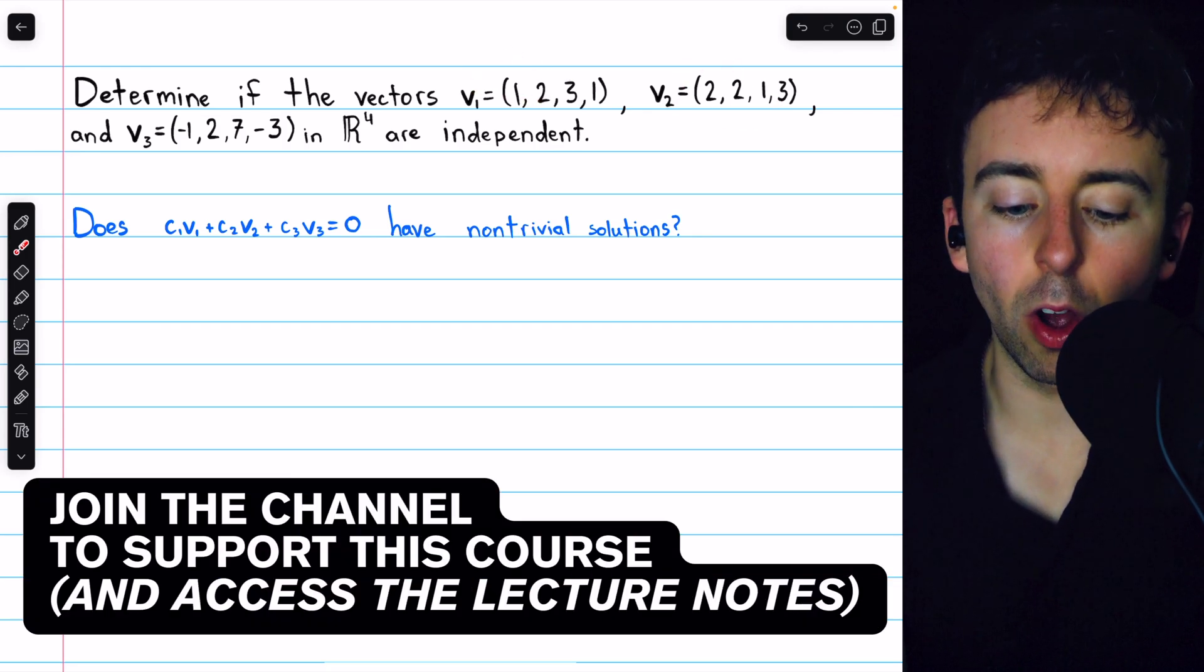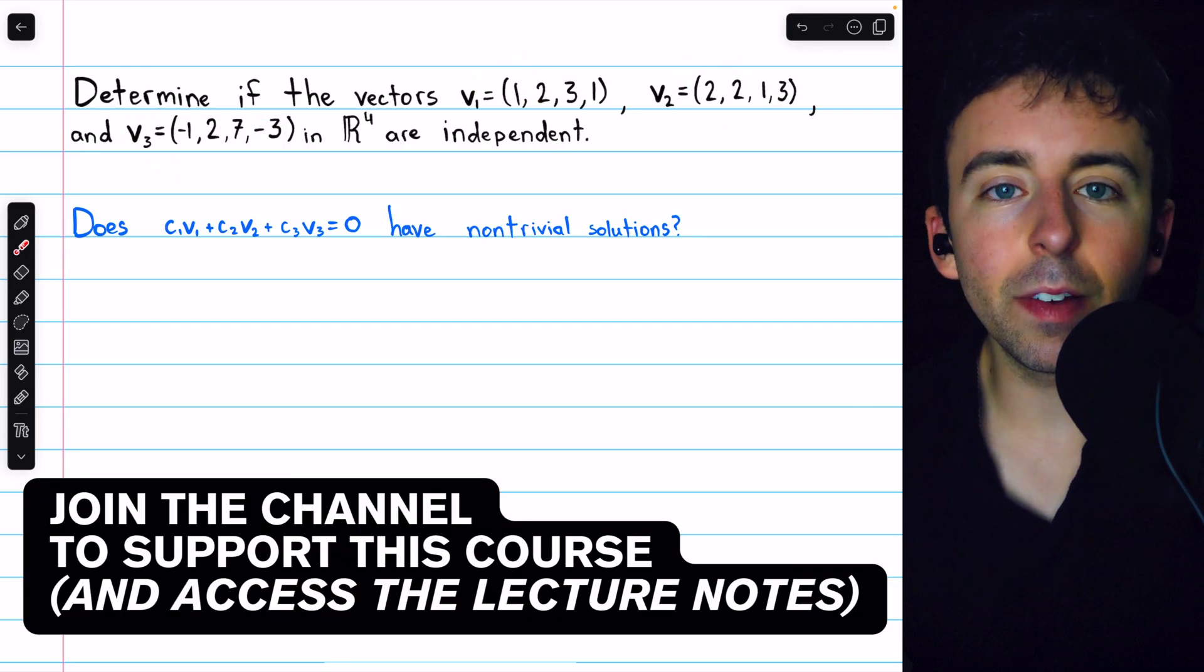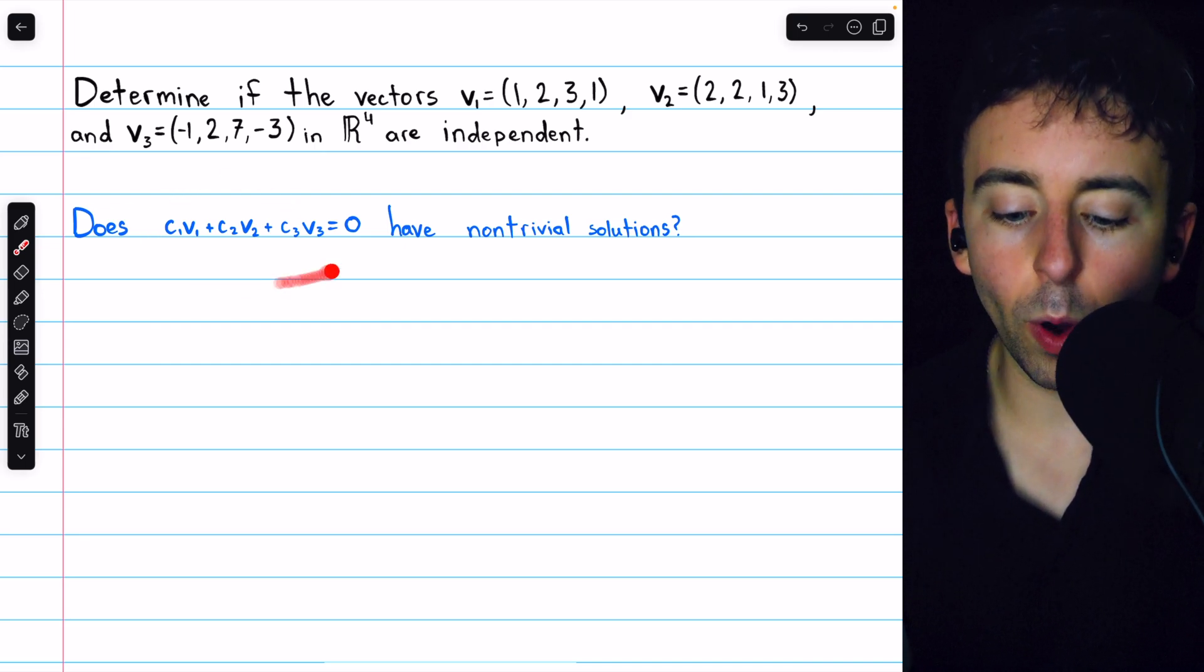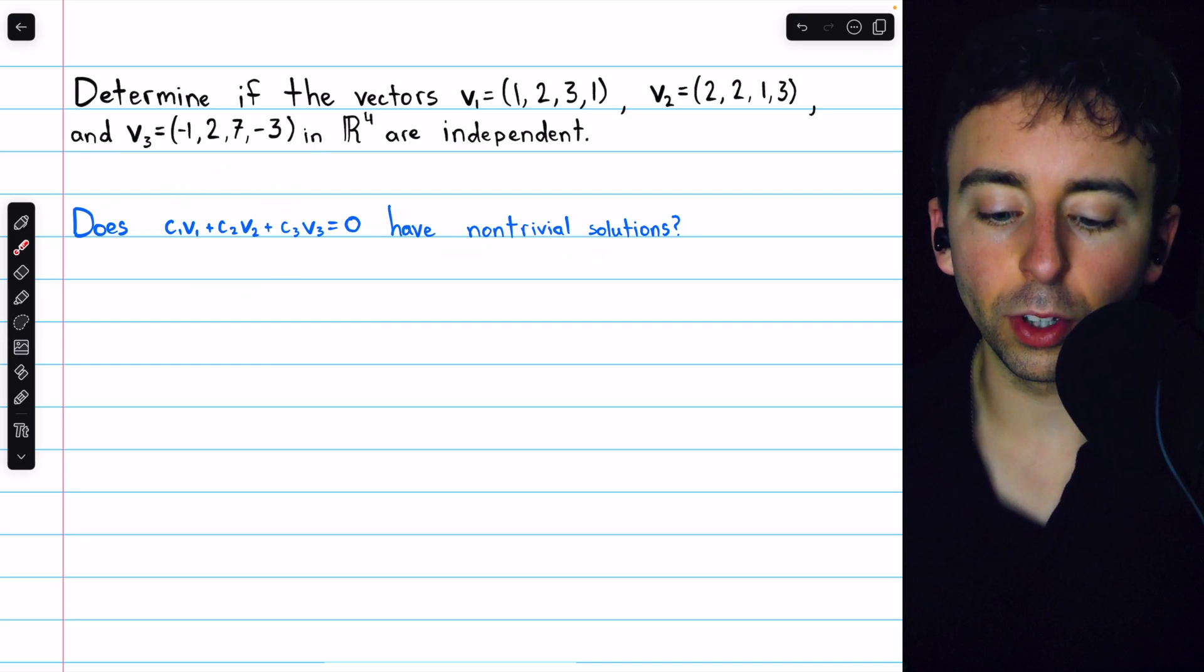Here are three vectors in R4. To determine if they're linearly independent, we need to determine if this equation has non-trivial solutions.